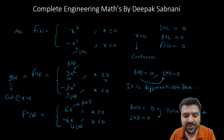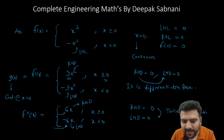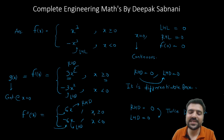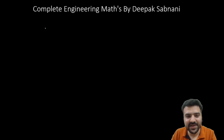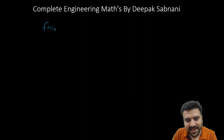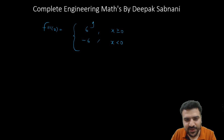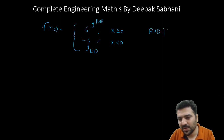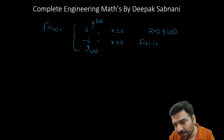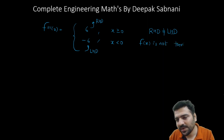To check thrice differentiability, first check continuity of f''(x) at x = 0: right-hand limit is 6(0) = 0, left-hand limit is -6(0) = 0, so f''(x) is continuous. We can differentiate: f'''(x) = 6 when x > 0 and f'''(x) = -6 when x < 0. At x = 0, the right-hand derivative is 6 and the left-hand derivative is -6. Since 6 ≠ -6, f(x) is not thrice differentiable.